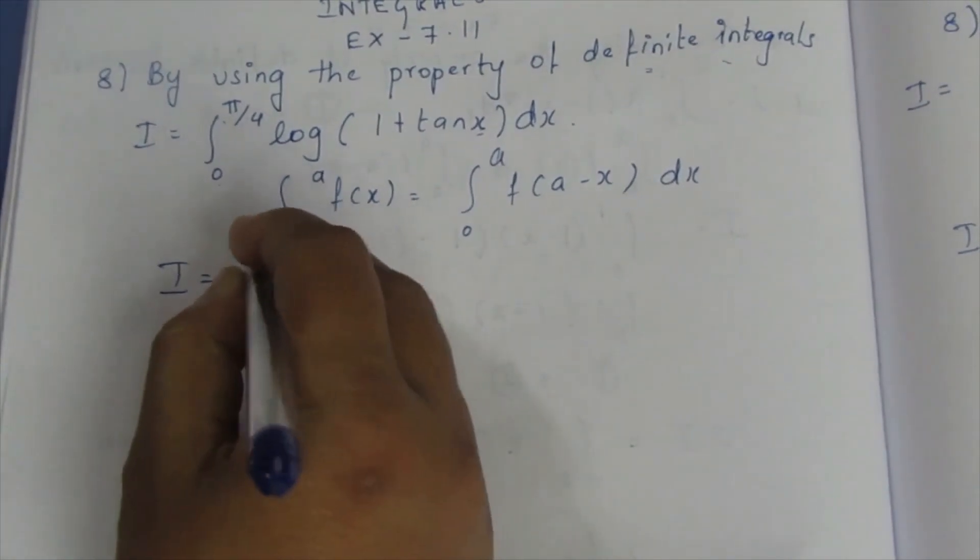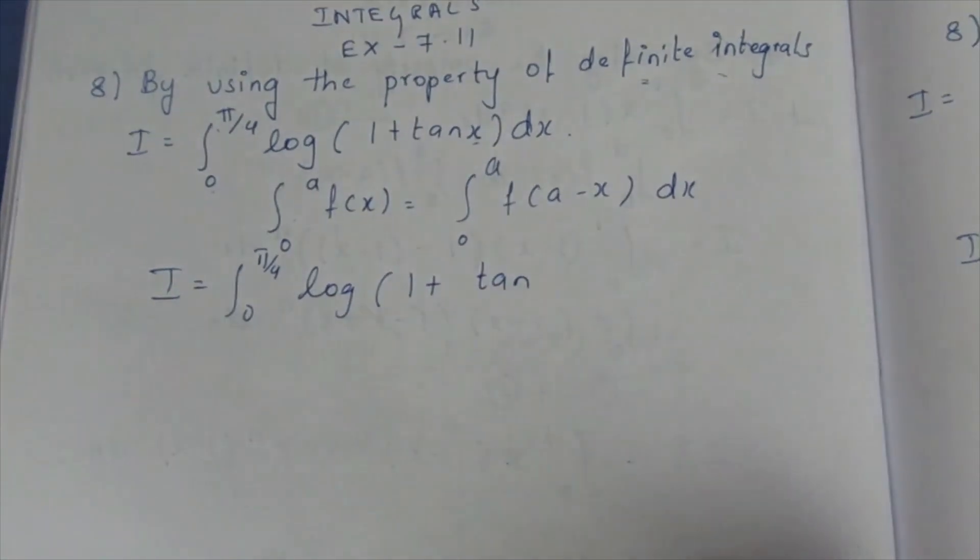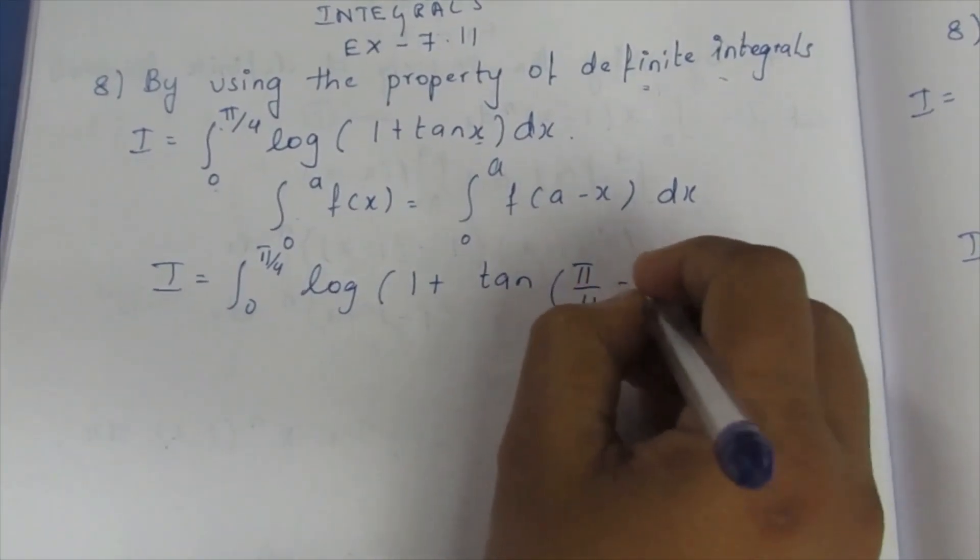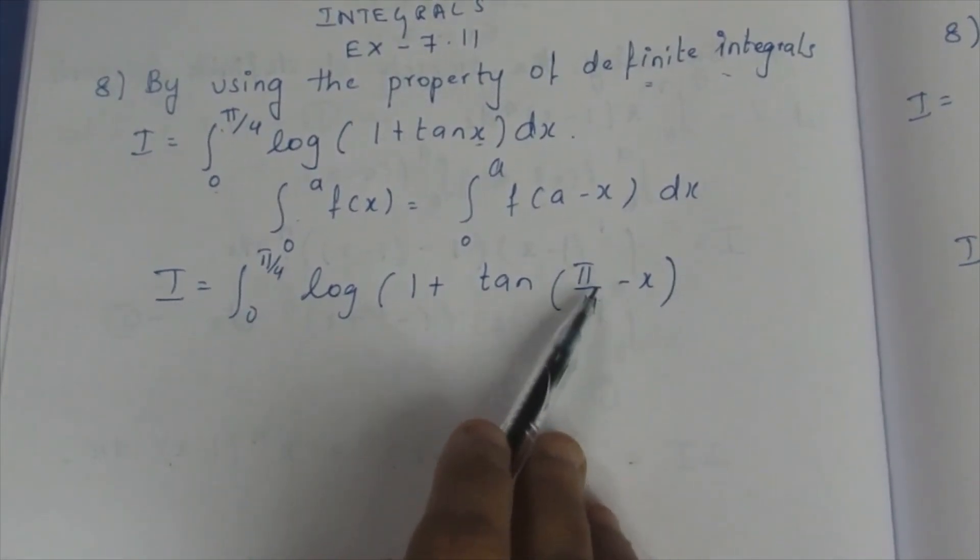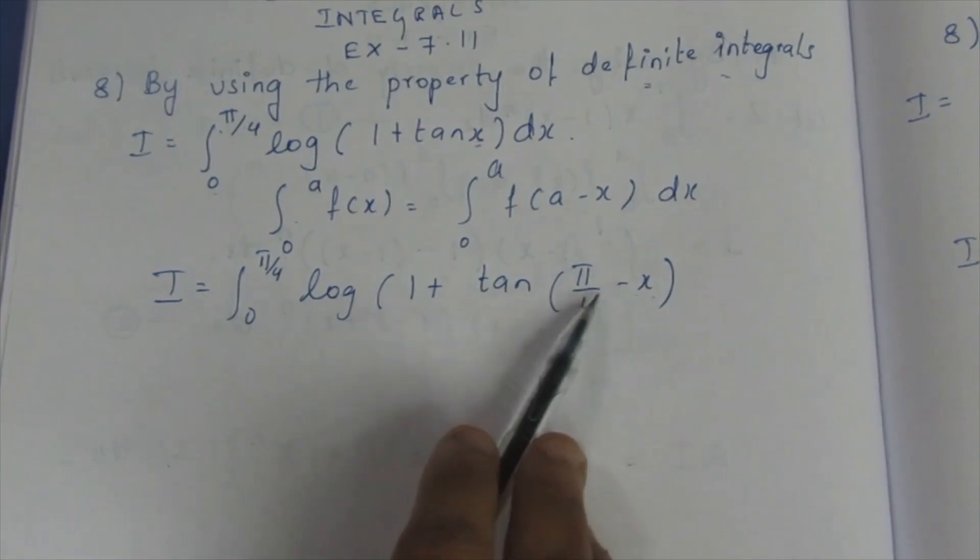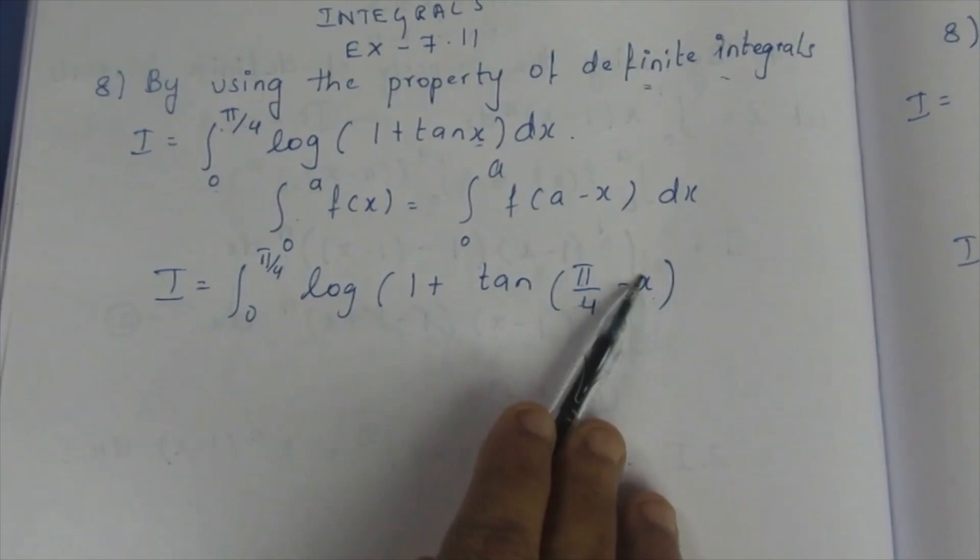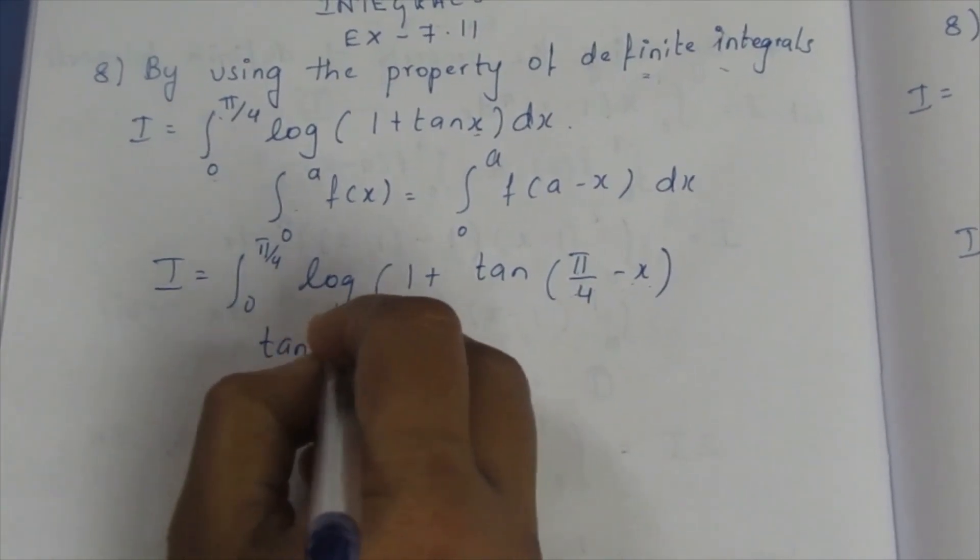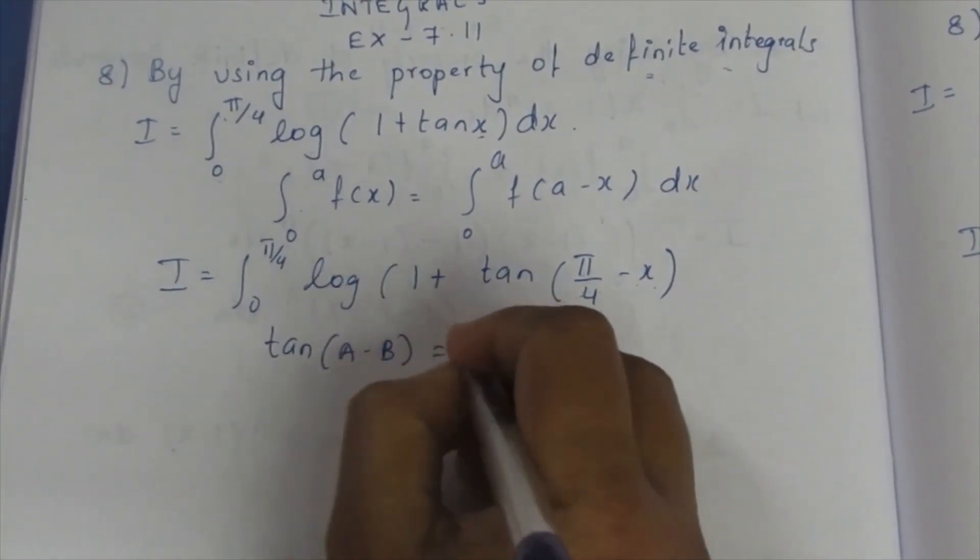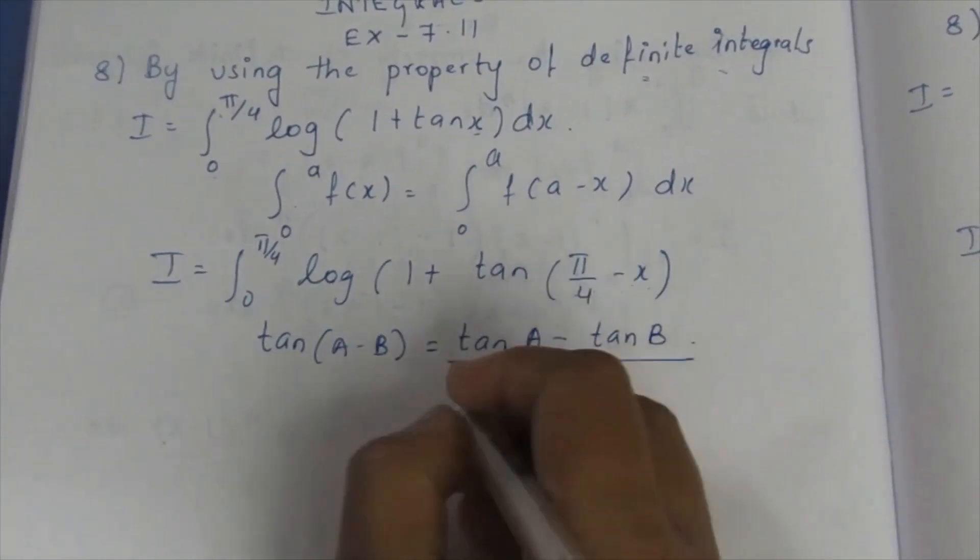From 0 to π/4 log(1 + tan(π/4 - x)). Here we know we can't solve this directly. This is not 90 minus theta. This is π/4 - x. If it is π/4 - x, we can't take this inside as we have learned in 11th standard, but we can use a formula. We know a formula for tan(a - b): tan(a - b) = (tan a - tan b)/(1 + tan a tan b).